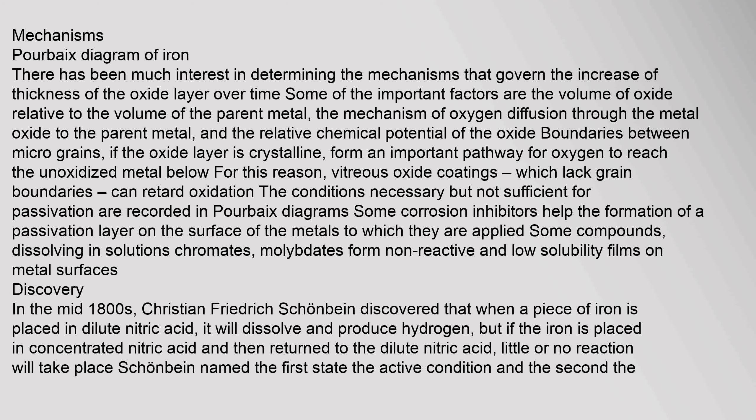There has been much interest in determining the mechanisms that govern the increase of thickness of the oxide layer over time. Some of the important factors are: the volume of oxide relative to the volume of the parent metal; the mechanism of oxygen diffusion through the metal oxide to the parent metal; and the relative chemical potential of the oxide boundaries between micro-grains. If the oxide layer is crystalline, grain boundaries form an important pathway for oxygen to reach the unoxidized metal below. For this reason, vitreous oxide coatings, which lack grain boundaries, can retard oxidation. The conditions necessary but not sufficient for passivation are recorded in Pourbaix diagrams.